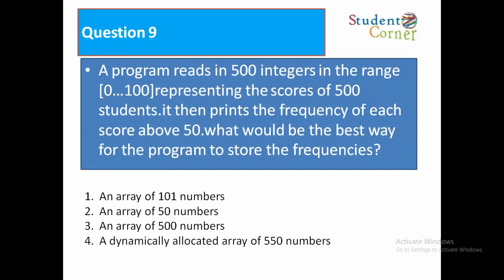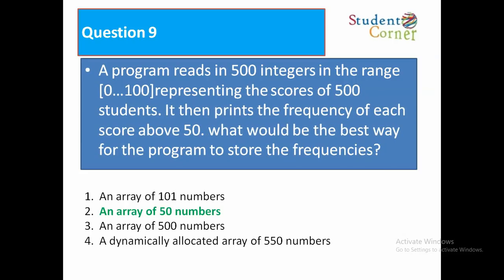Question 9: A program reads 500 integers ranging from 0 to 100, representing scores of 500 students. It then prints the frequency of each score above 50. What's the best way to store the frequencies? Options: 1. Array of 101 numbers, 2. Array of 50 numbers, 3. Array of 500 numbers, 4. Dynamically allocated array of 550 numbers. Answer: an array of 50 numbers.